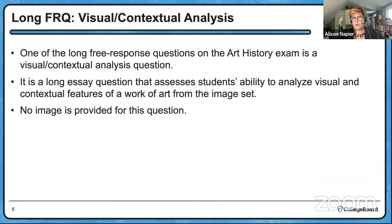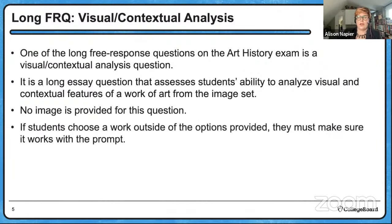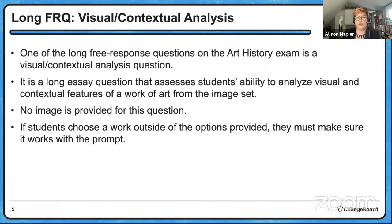I think that's why some of you went with the Slave Ship — a lot of you talked about the body parts in the water, and I think that really resonates when you learn it in class. If you choose a work outside of the prompt options, you get three choices but you can pick anything that works within the parameters of the prompt. Make sure it works with what you're being asked, as well as the date range and the geographic area.